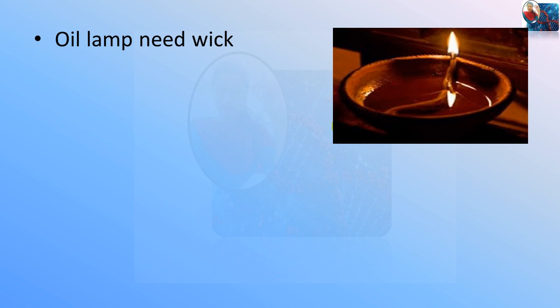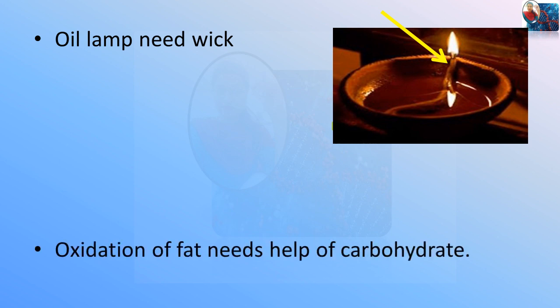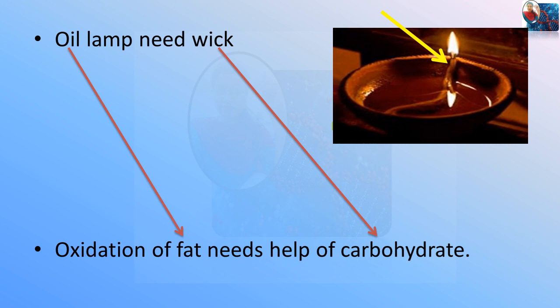Here is an image of an oil lamp which contains a wick. If we try to light the oil directly, we won't be able to. But when we put the wick in the diya or oil lamp, we are able to light it. This statement is true for our body also — this mechanism works in our body too. Oxidation of fat needs the help of carbohydrate. Oil in the lamp is similar to the fat in the body, and the wick is similar to the carbohydrate. Wicks are made up of cotton, and cotton is made up of cellulose, which is a polymer of glucose. Therefore, the ultimate thing which is burning the fat is carbohydrate.